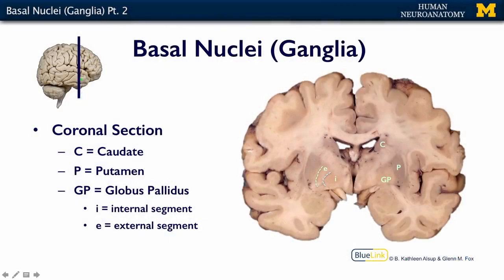This is a coronal section taken near the front of the brain. We can see the caudate nucleus and the putamen, which are part of your striatum. If you look at this slide more closely, you'll see that the caudate and the putamen are about the same color, which indicates that they have a common origin as the brain developed.